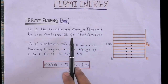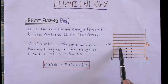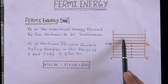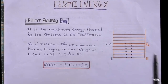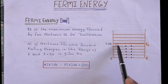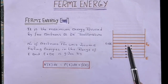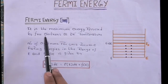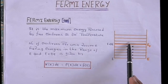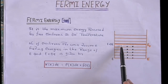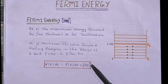Consider this as a metal — we know that there will be different energy levels in a metal, and these are the electrons filled in those levels. This highest energy level occupied by electrons, and the maximum energy possessed by the electrons at this highest energy level at absolute zero temperature, is called Fermi energy.